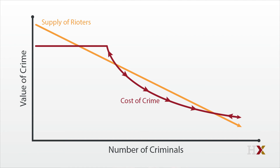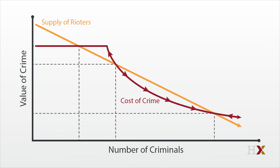As you can see, there are now three points where the two lines meet: a low crime point, which is normal times; a medium crime point; and a high crime big riot point.